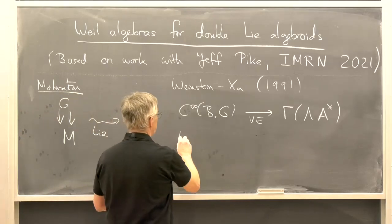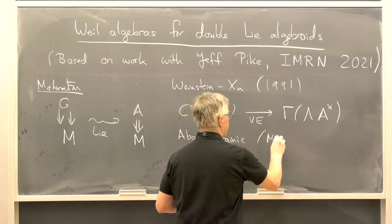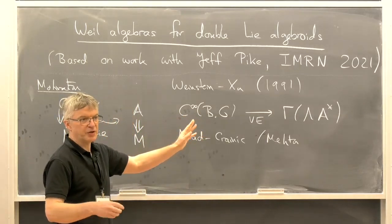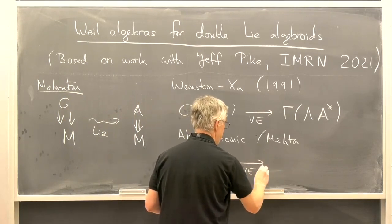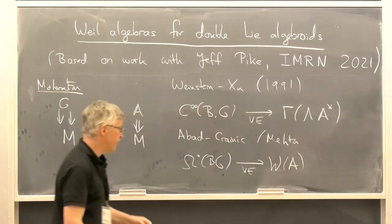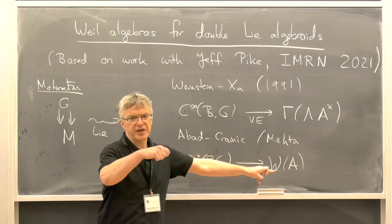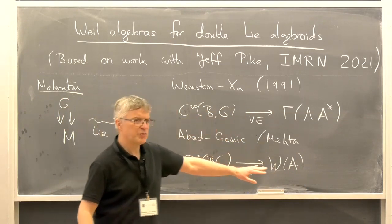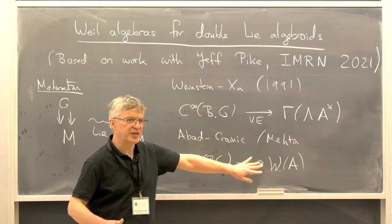There's a generalization of this due to Abad-Crainic, and I should also mention Mehta, where instead of smooth functions you look at differential forms on the groupoid or on BG. There's also an omega-of-BG Van Est map going to what they call a Weil algebra. If our groupoid is actually a group, then this Weil algebra is the classical Weil algebra — the symmetric algebra of g-dual tensor wedge of g-star, just a good old friend. But for algebroids, at least in the Abad-Crainic paper, the definition of this Weil algebra is much more complicated, and we wanted to understand it better.